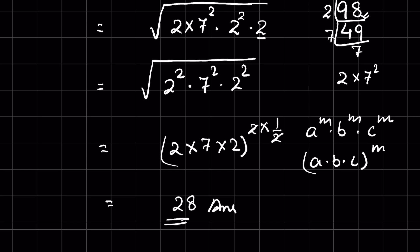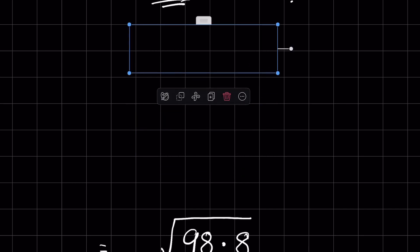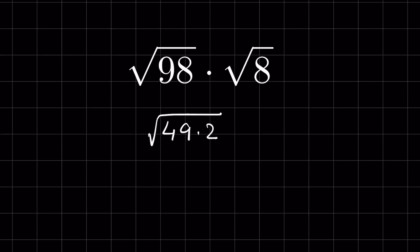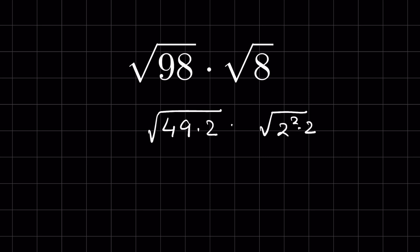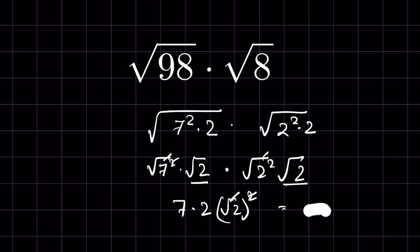Another method is to simplify the radicals first, then multiply. Square root of 98 can be written as square root of 49 times 2, and square root of 8 as square root of 2 squared times 2. Since 49 is 7 squared, we get square root of 7 squared times square root of 2, times square root of 2 squared times square root of 2. Removing the square roots with their matching squares gives 7 times 2, and combining the remaining square root of 2 times square root of 2 as square root of 2 squared also simplifies, giving the same answer of 28.